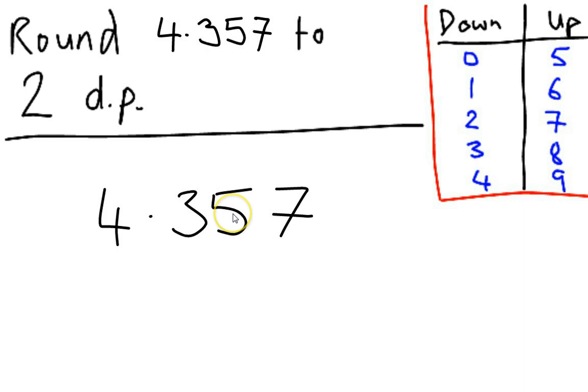What we're going to do is after the second digit after the decimal place, I'm going to put a line down there. And that tells me we're going to find out if 4.357 is closer to 4.35 or to 4.36. What we're going to do now is look at the digit that comes immediately after our line, and I'm going to see that's a 7.